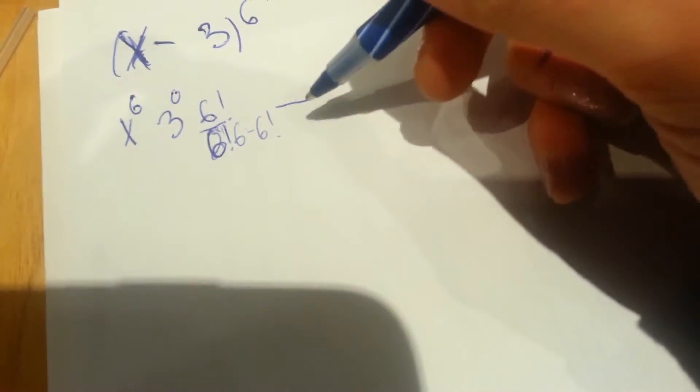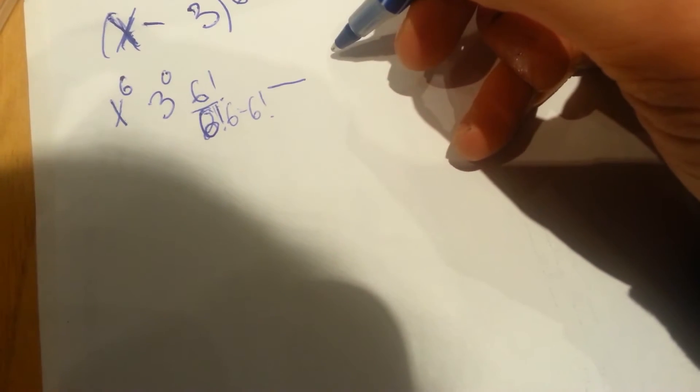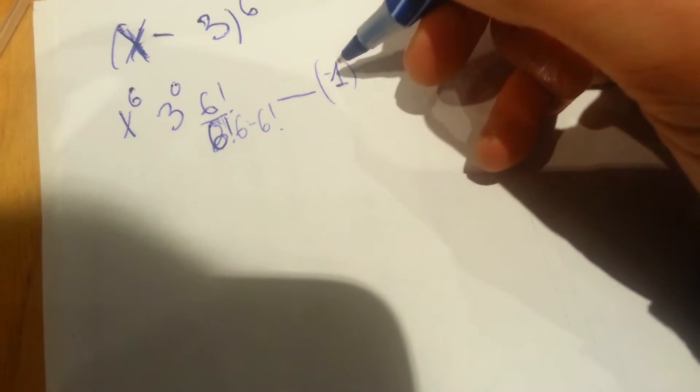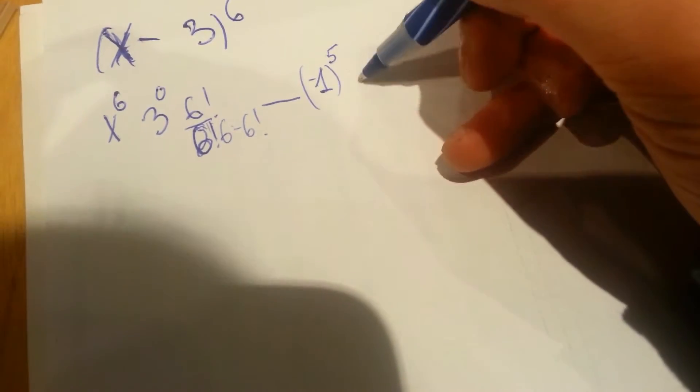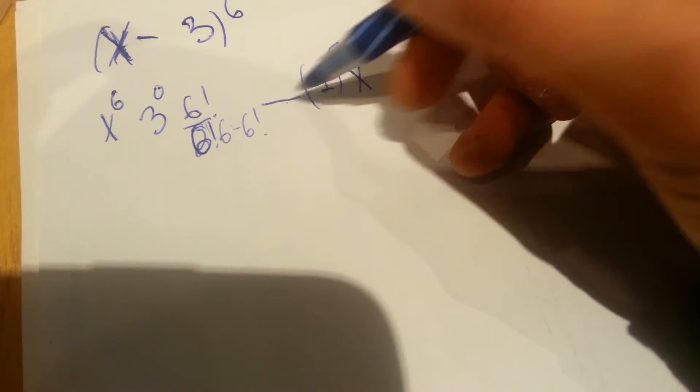x minus 3, to the 6th degree. Now, because this is minus, we're going to have a minus right here — we're going to be alternating. So you've got to imagine that you raise minus 1 by the 5th degree, so that's why we get minus here.